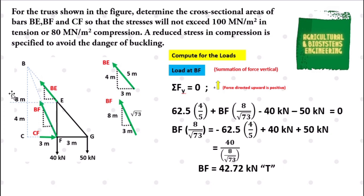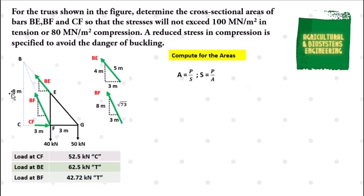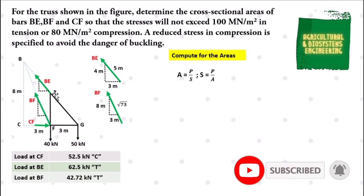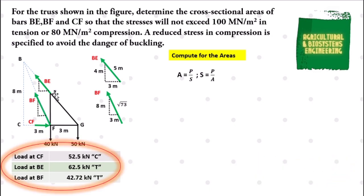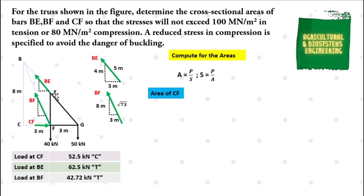Our next step is to solve for the cross-sectional areas of bars BE, BF, and CF. To solve for the area, we use the generic formula: area equals load divided by stress, derived from stress equals load over cross-sectional area. A summary of the loads solved is provided on screen. We begin with the cross-sectional area of CF: area of CF equals load at CF divided by its stress, which gives 52.5 kN divided by 80 MN per square meter.